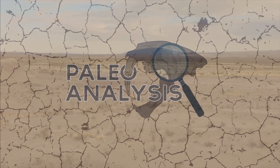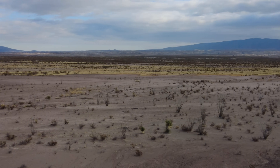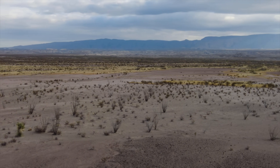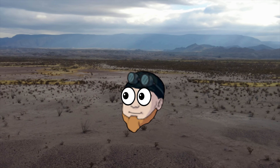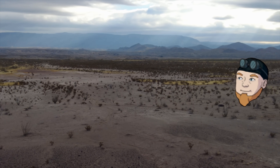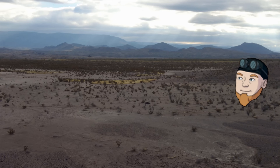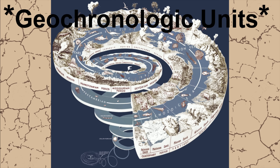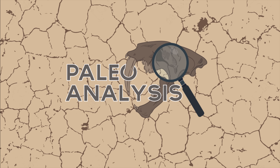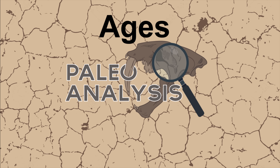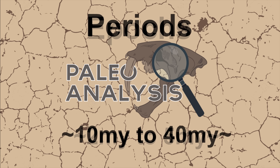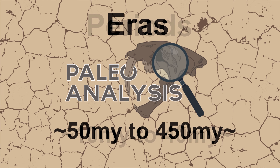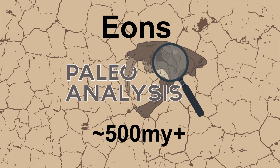Before we really get into this, I think I should explain a few things for those who don't already know how geologic time is measured. The history of the Earth spans roughly 4 billion 540 million years — an absolutely unfathomable amount of time. To help wrap our heads around something so vast, we've organized Earth's history into several different chronological units, or geochronological units. The smallest unit we'll be using is ages, generally measured in up to millions of years. Epochs are normally measured in several million years, periods in tens of millions of years, eras in 50 to several hundred million years, and eons normally cover half a billion years or more.